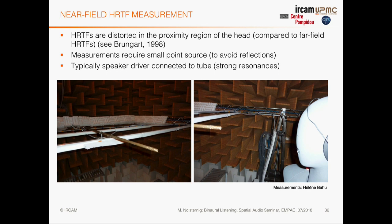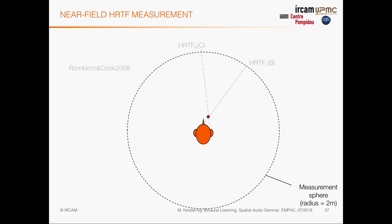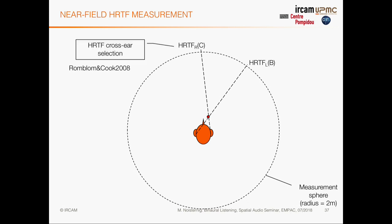Brungart measured near-field HRTFs using a tube as a point source, but equalizing the tube resonances was very difficult. An alternative approach: place small loudspeakers in the ear of a dummy head and, using acoustic reciprocity, simultaneously measure many distances. As the source moves closer, the direct-to-reverb ratio changes and the HRTF itself changes due to the shifting perspective — what Bromley-Cook call 'cross-ear selection,' where the far ear receives a different effective HRTF than the near ear.